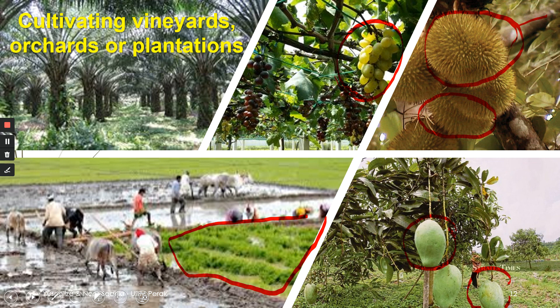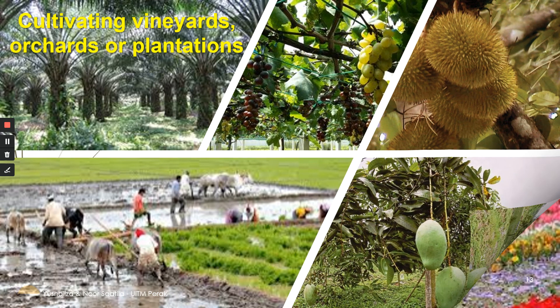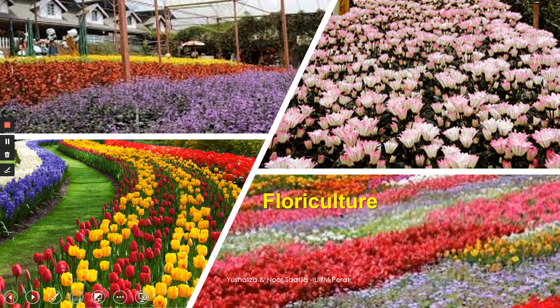The Harumanis trees are a bearer plant, but the Harumanis fruit itself is an agricultural produce. We're going to talk about bearer plants, and there are also some floriculture activities.